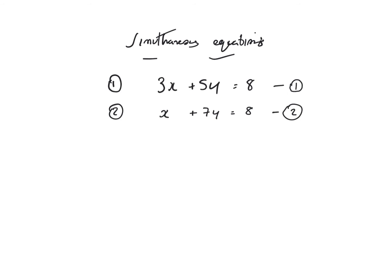Now, the type of examples we looked at in class last day were, for example, 2x plus 3y equals 5 and 2x plus 5y equals 7, where you could get rid of those x's by taking one equation away from another. Remember: same side, same sign — subtract; different signs — add. Well, this time I can't do that because the 7y and 5y won't cancel out, and the 3x and the x won't cancel out either.